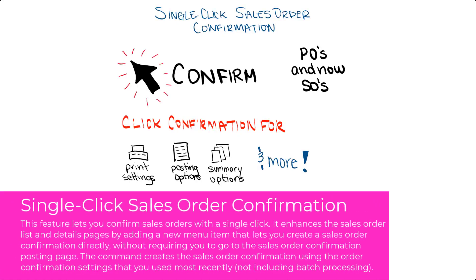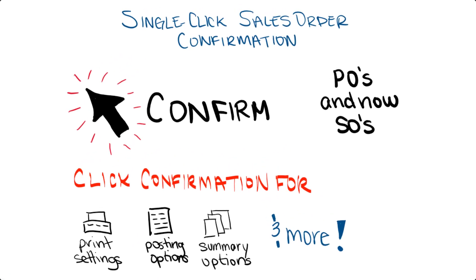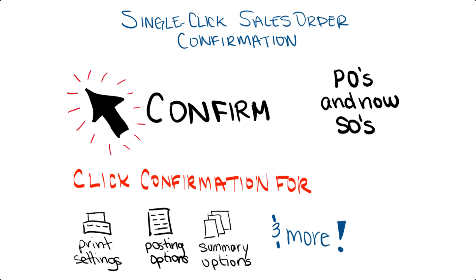With this new single click sales order confirmation feature, you can confirm sales orders with a single click. It enhances the sales order list page and the detail pages by adding a new menu item or button that lets you create a sales order confirmation directly, without requiring you to go to the sales order confirmation posting page. The command is designed to create the sales order confirmation using the confirmation settings you most recently used. If you're familiar with the confirm button on the purchase order page, this new confirm button on the sales order page works pretty much exactly the same way.